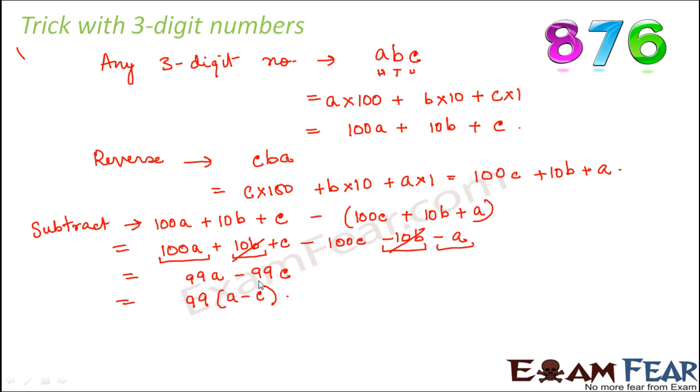So again, when you arrive at the result, you see that the difference between these two numbers is dependent only on the values of A and C, that is the first digit and the last digit. If A is greater than C, the difference is completely divisible by 99. If C is greater than A, the difference is also completely divisible by 99.